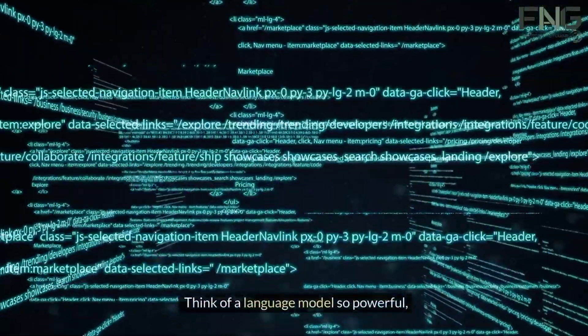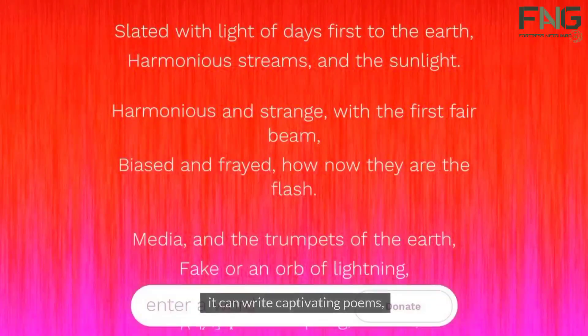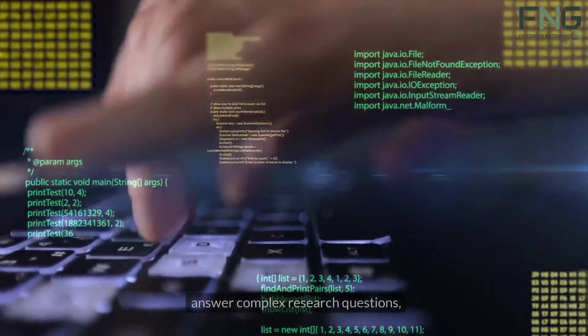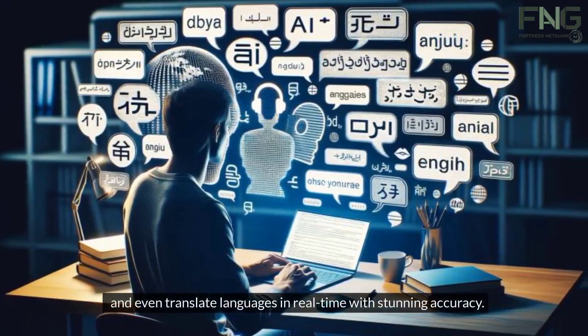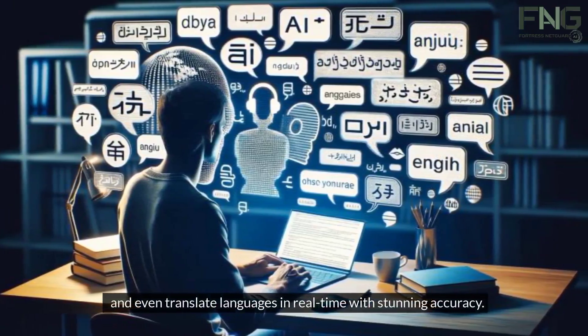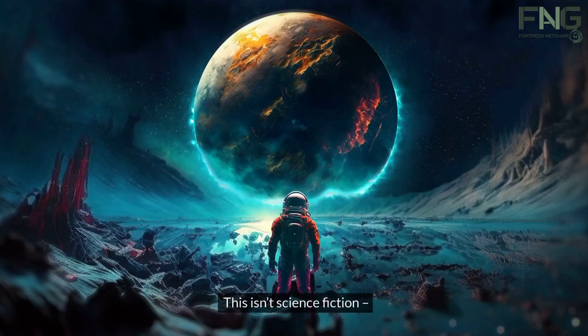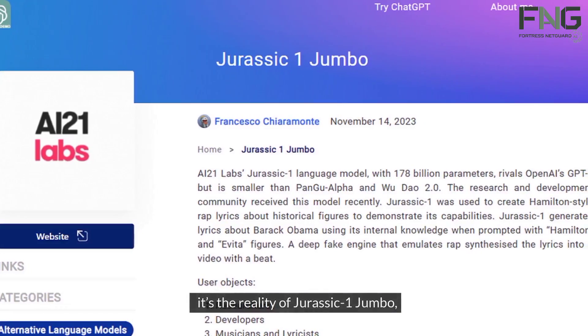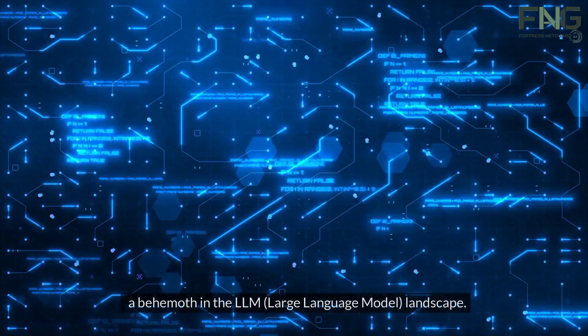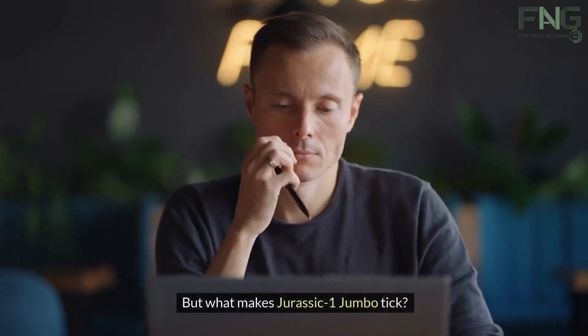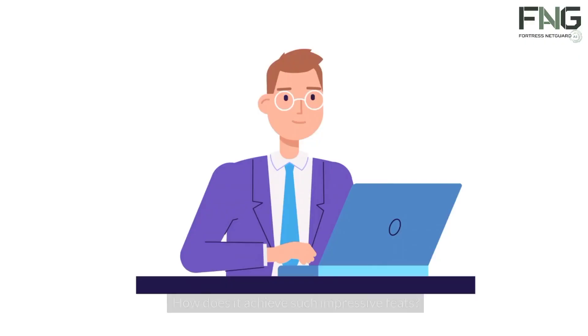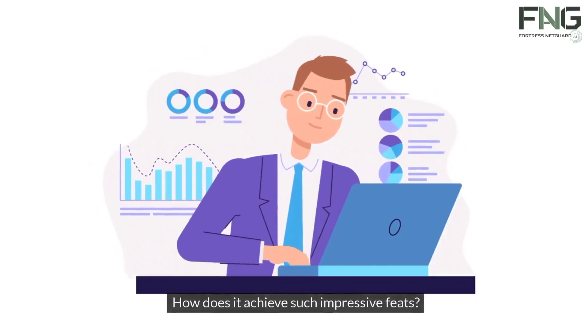Think of a language model so powerful it can write captivating poems, answer complex research questions, and even translate languages in real time with stunning accuracy. This isn't science fiction—it's the reality of Jurassic-1 Jumbo, a behemoth in the LLM (large language model) landscape. But what makes Jurassic-1 Jumbo tick? How does it achieve such impressive feats?